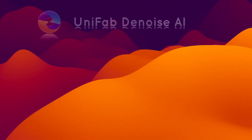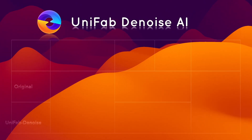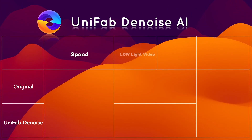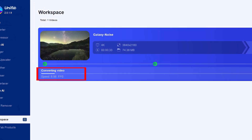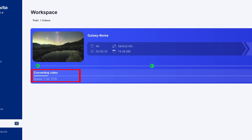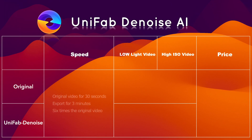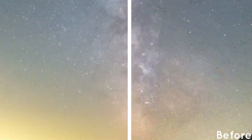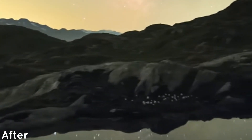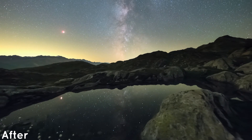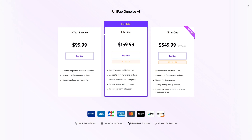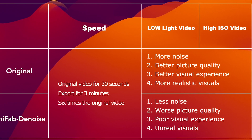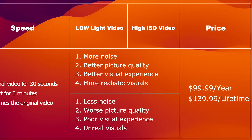At the end of the video, let's summarize through a table. We'll cover UniFab's AI features in terms of output speed, export effects for low-light videos, and high ISO videos. The export speed is very fast, with export time about six times longer than the original video duration. In terms of effect, UniFab transforms high-noise videos with richer details, higher video quality, better visual experience, and more realistic visuals. The pricing for this feature is $99.99 per year or $139.99 for a lifetime license. If you need to convert high-noise videos into clearer videos, come and subscribe to UniFab for high-quality service.